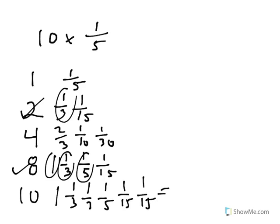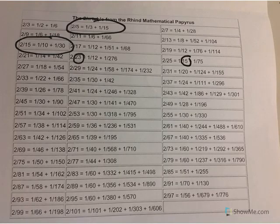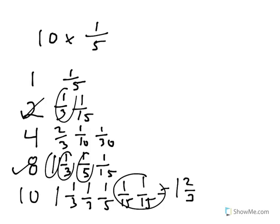And we could simplify this a bit. One and two-thirds. These two-fifteenths could actually be written as one-tenth plus one-thirtieth, if you want.